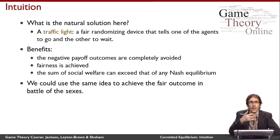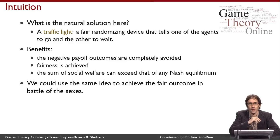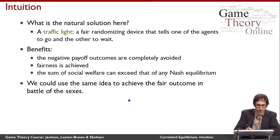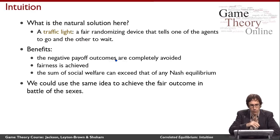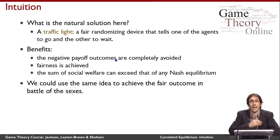The traffic light tells one driver to go and the other to wait, and it's fair in the sense that at different times it makes different recommendations. The benefits are that the negative-payoff outcomes are completely avoided, we can achieve something fair, and in general — though not in this example — it's possible to achieve a sum of social welfare that exceeds what can be achieved in any Nash equilibrium.